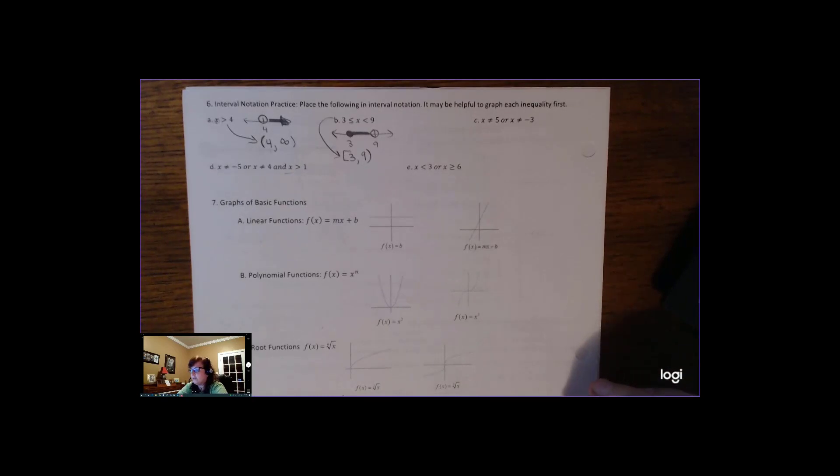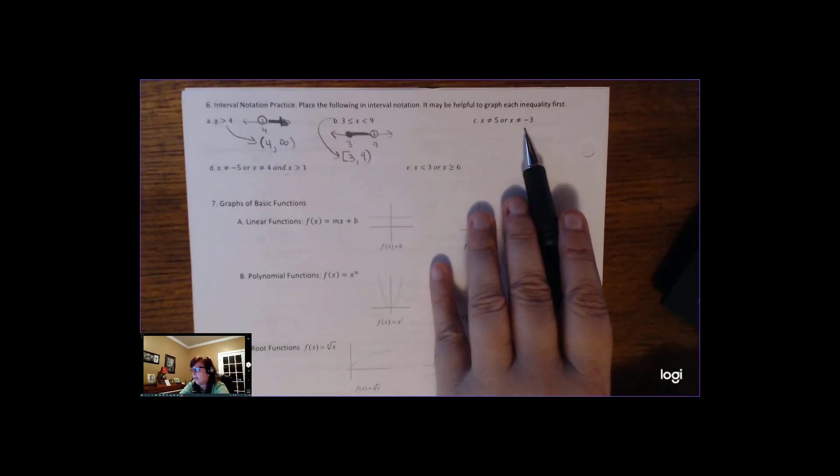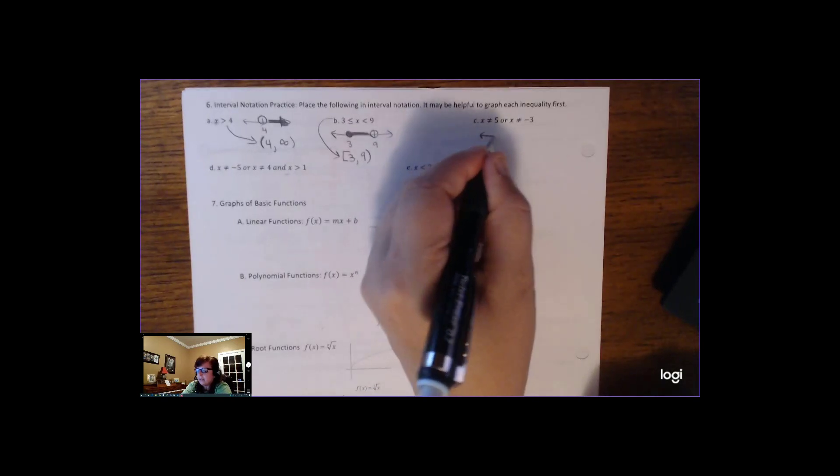Okay, now c is very important. This is going to happen a lot when we do domain. This is saying that x is not 5, or x is not 3. So how would we turn around and write that in interval notation? Well, the best thing to do is to look at the graph.